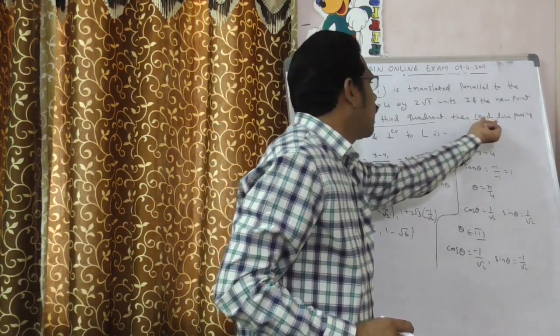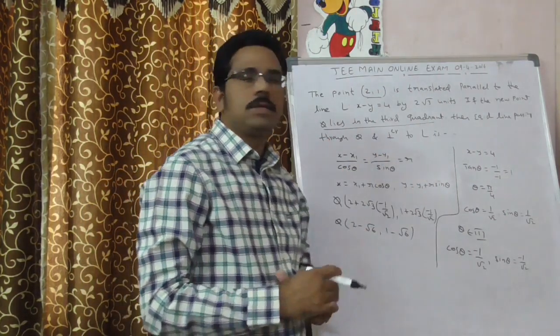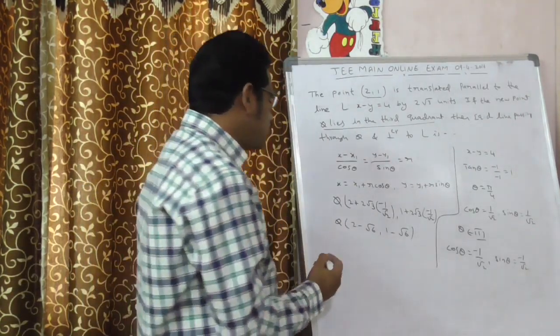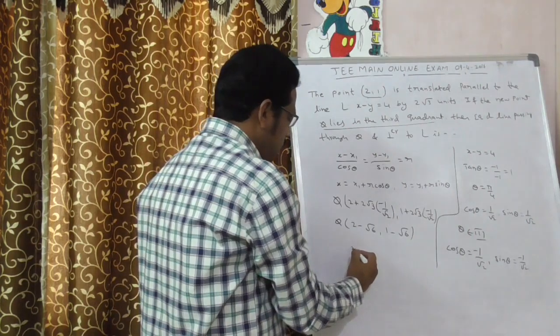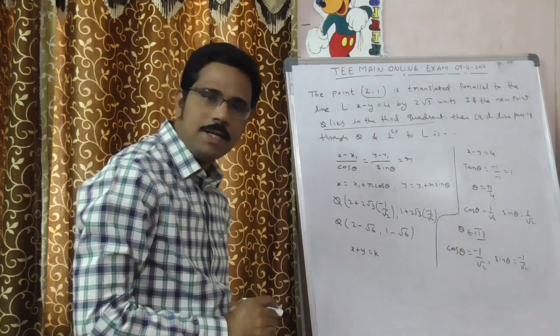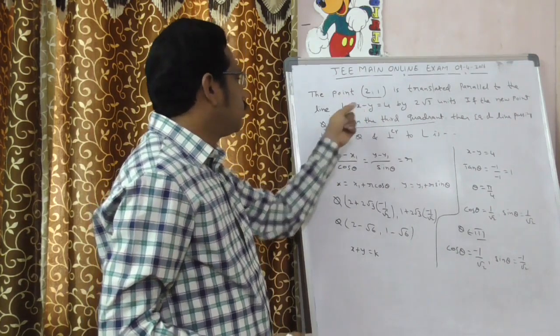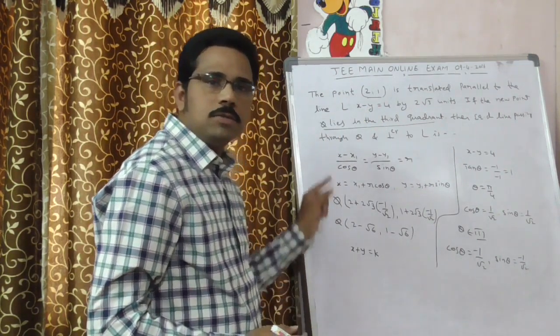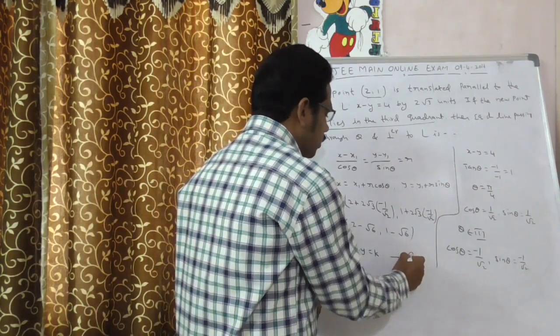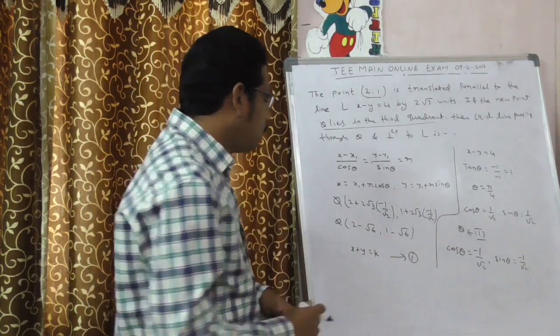Now, come to the next concept. What you have to calculate here? You have to calculate equation of the line passing through this q and perpendicular to the given l. What is l? That is x minus y is equal to 4. The line which is perpendicular to x minus y is equal to 4 can be written as x plus y is equal to k. Very simple concept - writing of perpendicular lines. x minus y equal to 4 is a given line. Then, you can write perpendicular line to x minus y equal to 4 is x plus y is equal to k. I am writing it as equation 1.